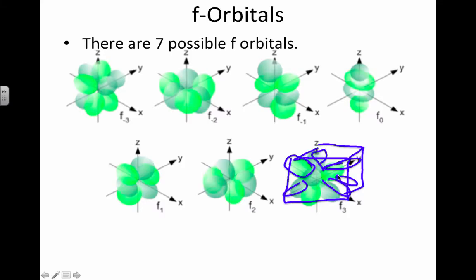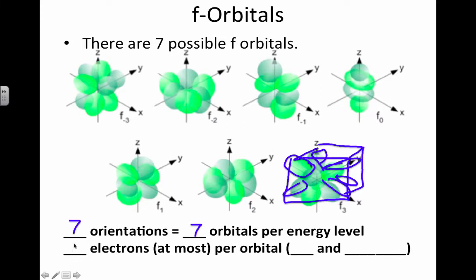So we're going towards the corners of the box. That gives us lots of different regions to hide electrons. So we have seven orientations that are possible, giving seven orbitals per energy level. We can put in each orbital only two electrons, one that spins up and one that spins down. So if seven orbitals are holding two electrons each, that gives a total of fourteen electrons that could fill all the f orbitals.